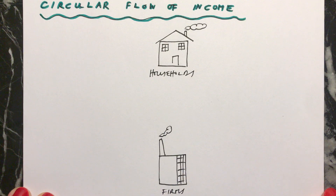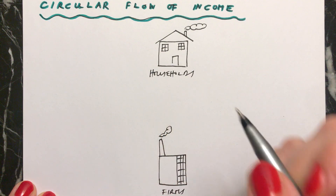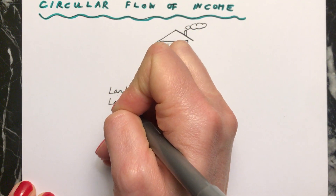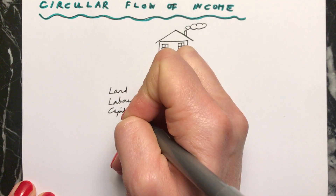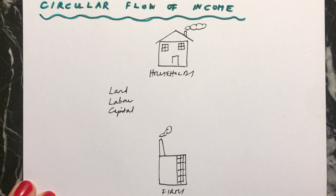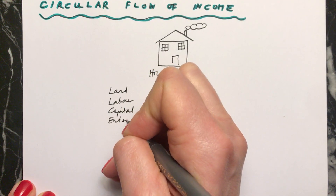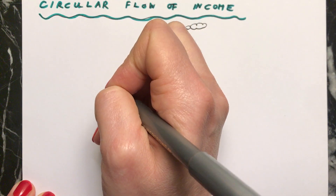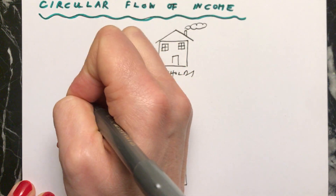They're the firms. And we assume that within this very simple economy, the households own the land, the labour, the capital — remember in economics that means machines — and the enterprise. And you'll remember that those things are called the factors of production.